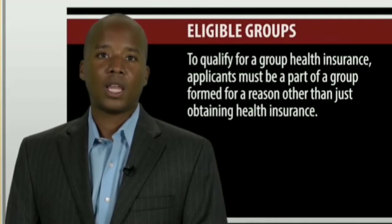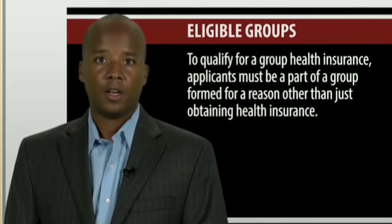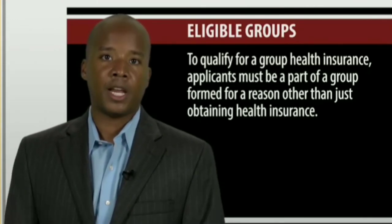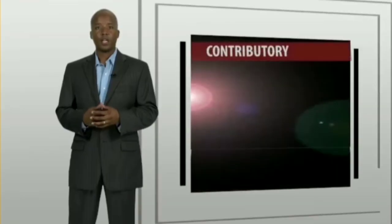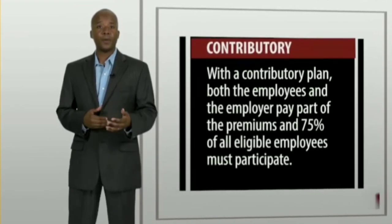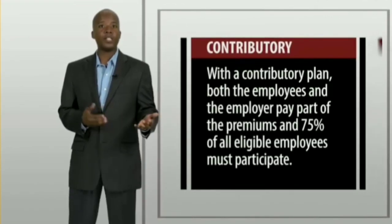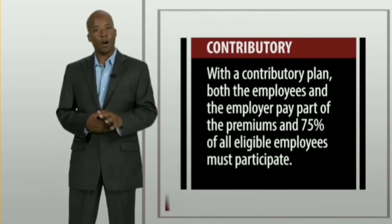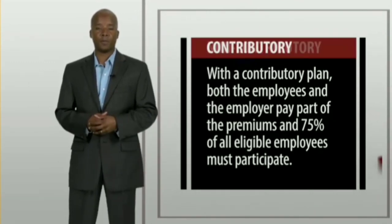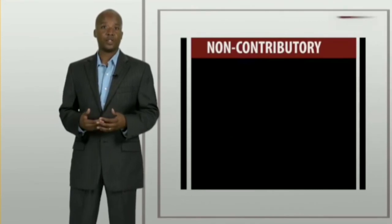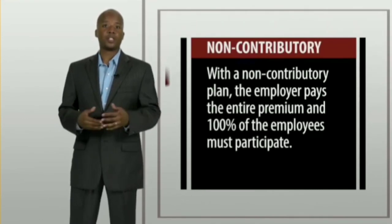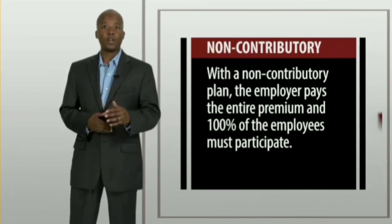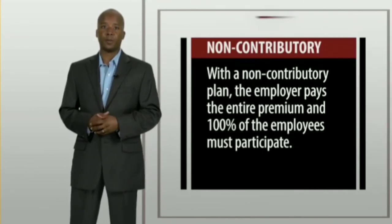To qualify for group health insurance, applicants must be part of a group formed for a reason other than just obtaining health insurance. With a contributory plan, both the employees and the employer pay part of the premiums and 75% of all eligible employees must participate. With a non-contributory plan, the employer pays the entire premium and 100% of the employees must participate.